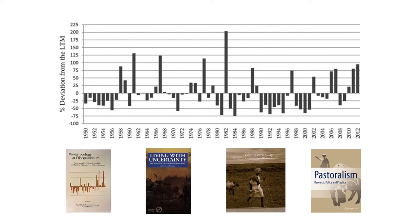The first slide is a picture of the rainfall pattern in Lodwa, Northern Kenya, and the deviation from the long-term mean. If you took a picture or presented a graph of virtually any place you are working in, it would look similar — highly variable.